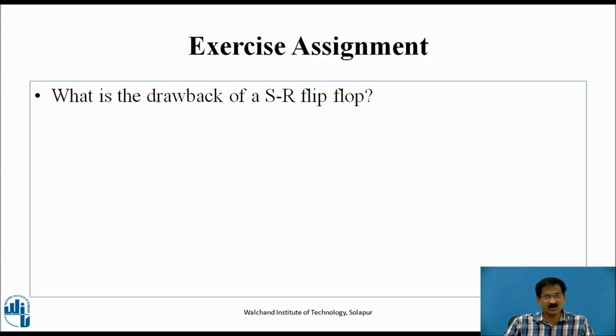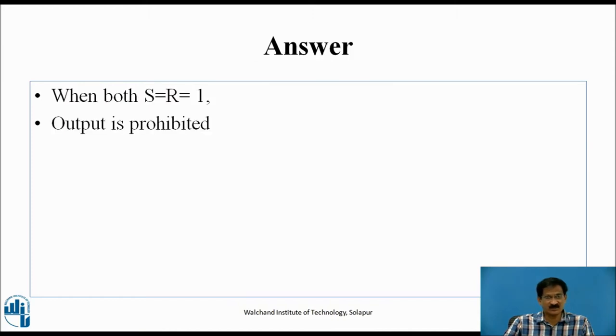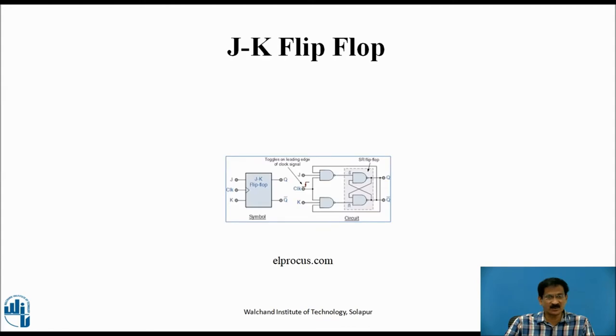Exercise assignment: What is the drawback of SR flip-flop? The answer is, when both S and R are equal to 1, the output is prohibited. This condition is not allowed because the last two gates will try to become 1 output, Q and Q-bar will try to become 1, which is prohibited.